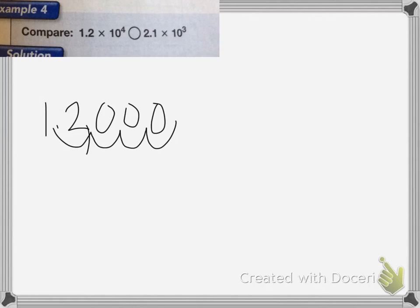And 2.1 times 10 to the 3rd power is the same as moving it 1, 2, 3 places: 2,100. 12,000 is much bigger than 2,100, so it's going to be greater than.